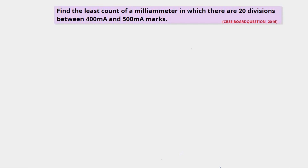An ammeter is a device used to measure current in a circuit. We have to find out the least count of this milli ammeter. The least count of a device is the least value which can be measured accurately by it. For an ammeter, it is the least value of current it can measure; for a voltmeter, it is the least value of voltage it can measure.